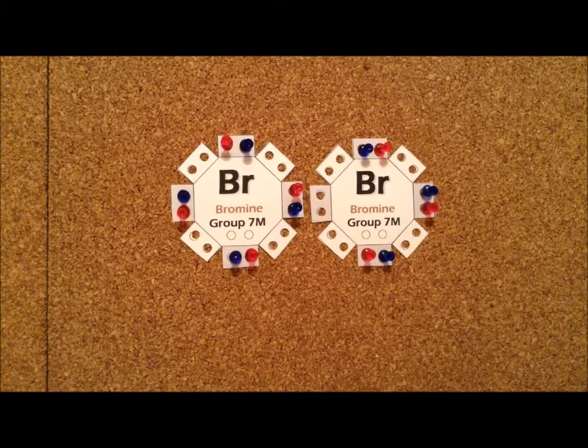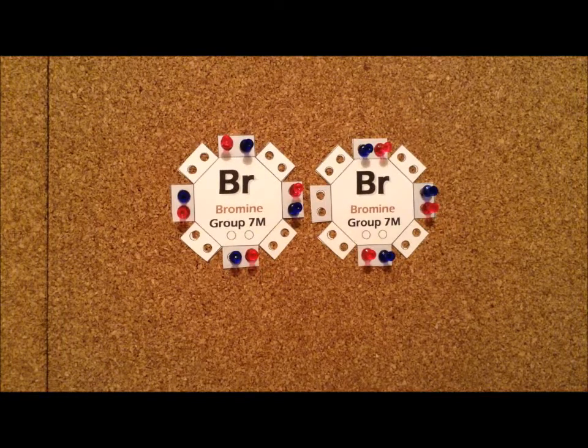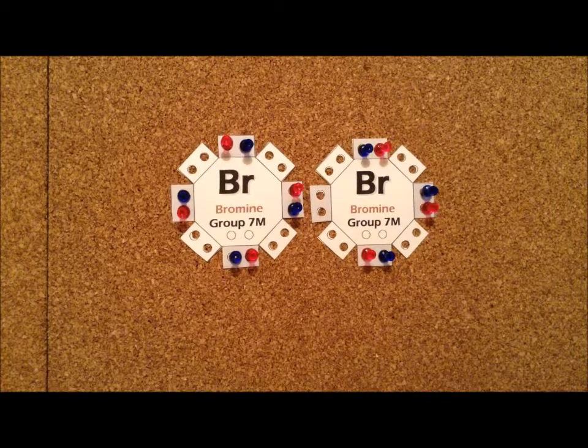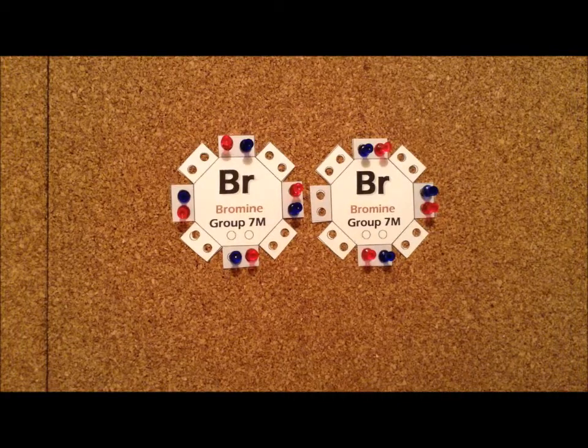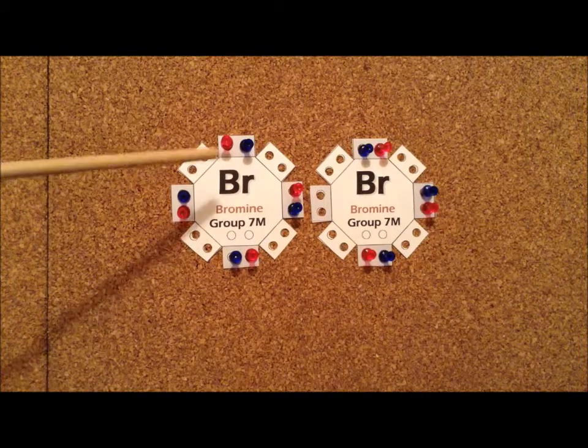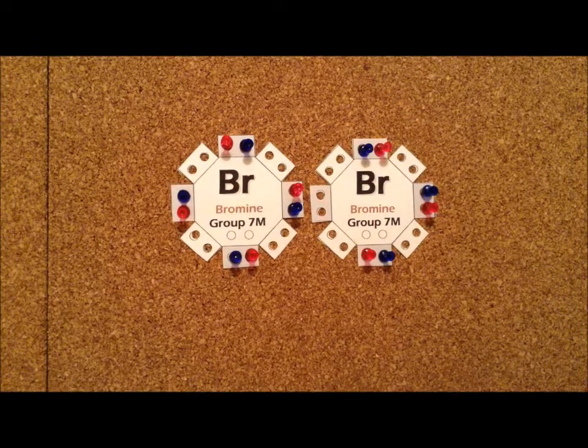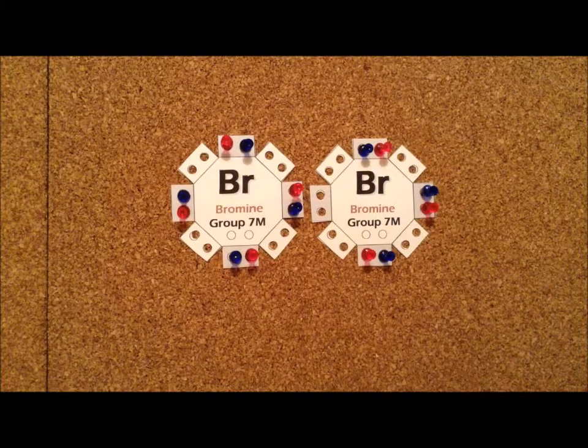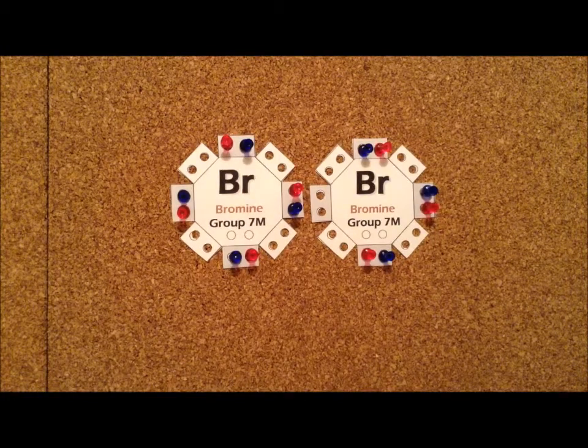When bromine reacts, it reacts somewhat differently than chlorine does. We had seen that chlorine tends to break the chlorine-chlorine bond homolytically, thereby forming two free radicals. Bromine on the other hand tends to cleave the bond heterolytically so that one of the bromines gets both of the electrons and the other one gets neither of them. As a result, the species on the left hand side is a bromide ion Br-1, and on the right hand side we have a bromonium ion Br+.